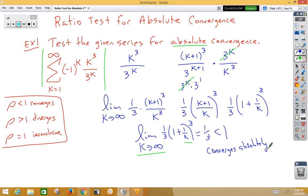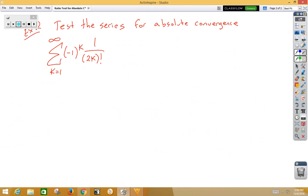And let's see if we can do one more. So, in example 2, test the series for absolute convergence. Again, absolute is telling us we should think about taking the absolute value of this. Well, if we take the absolute value of it, then now we're looking at 1 over 2k factorial.